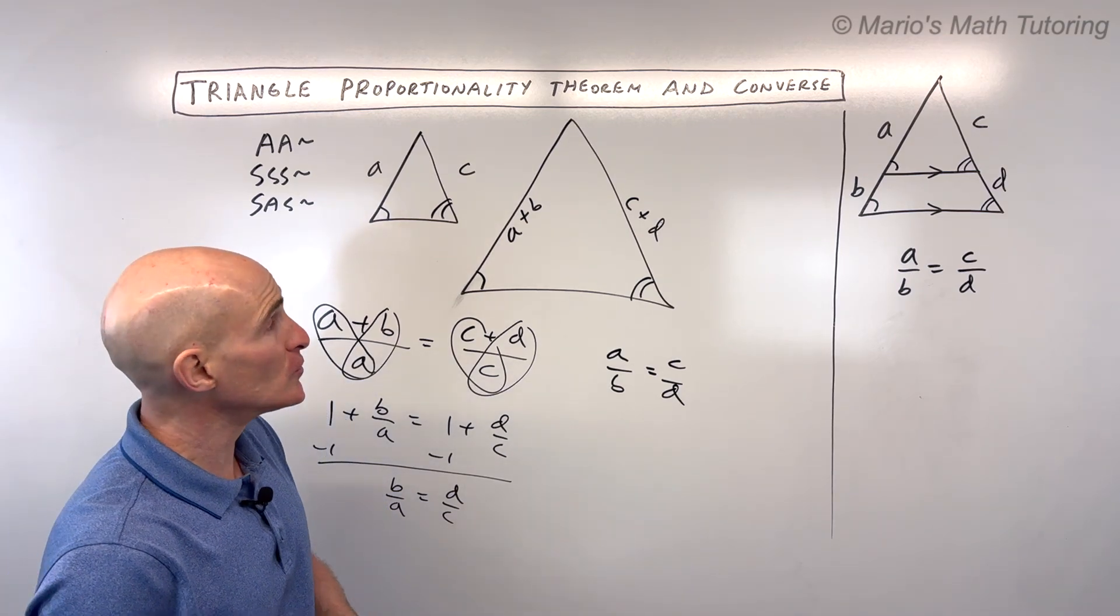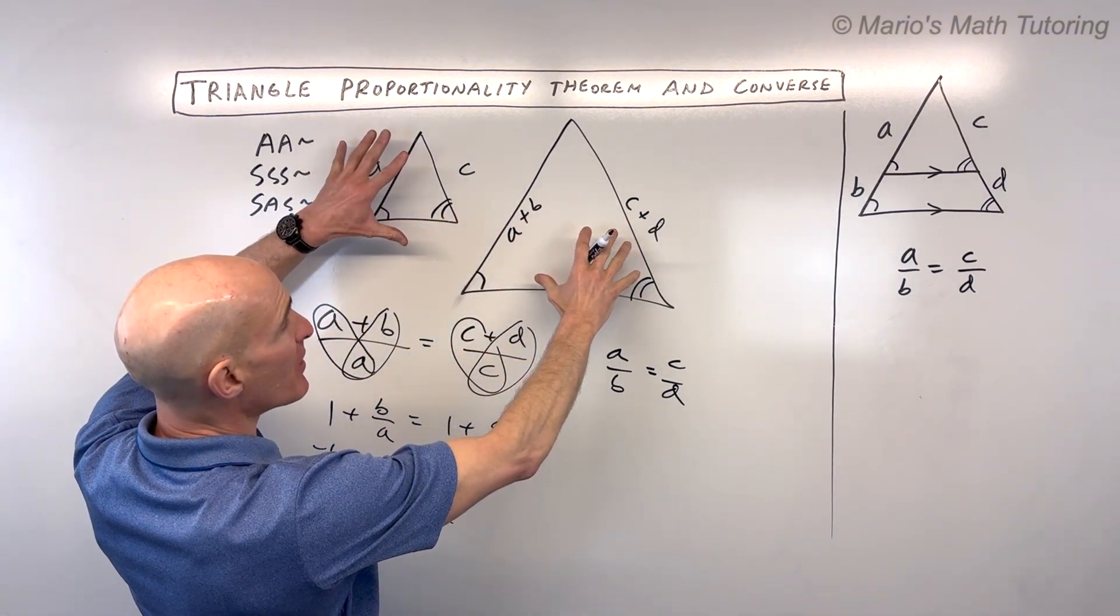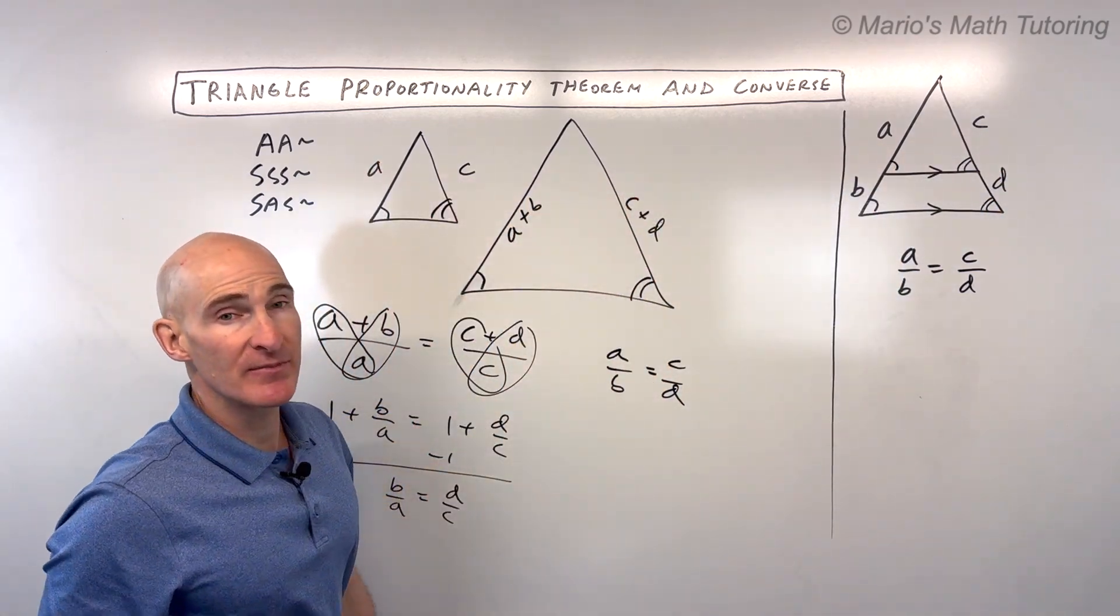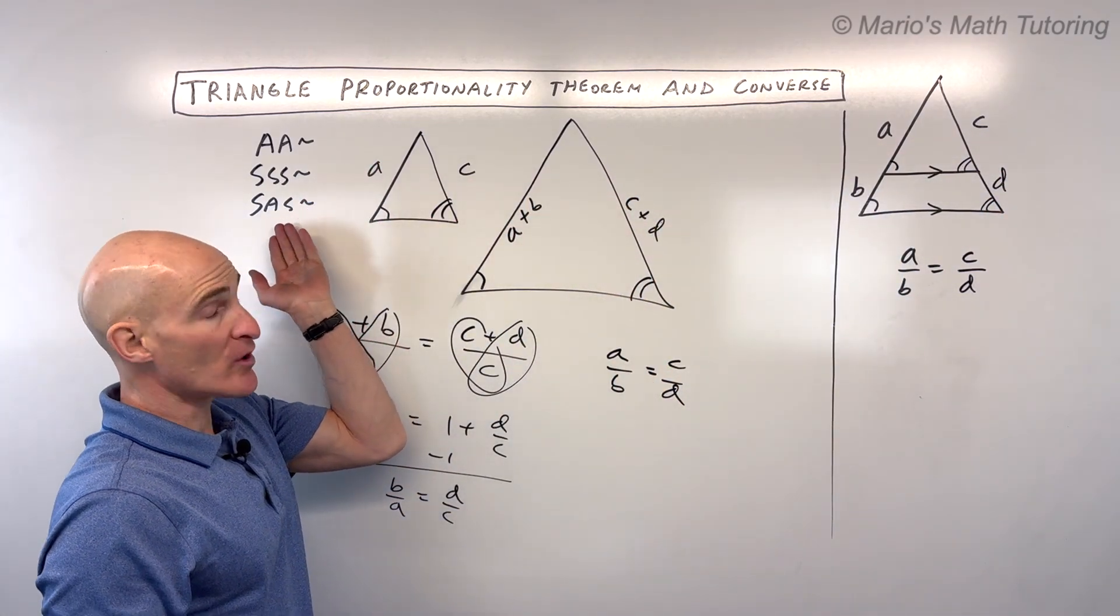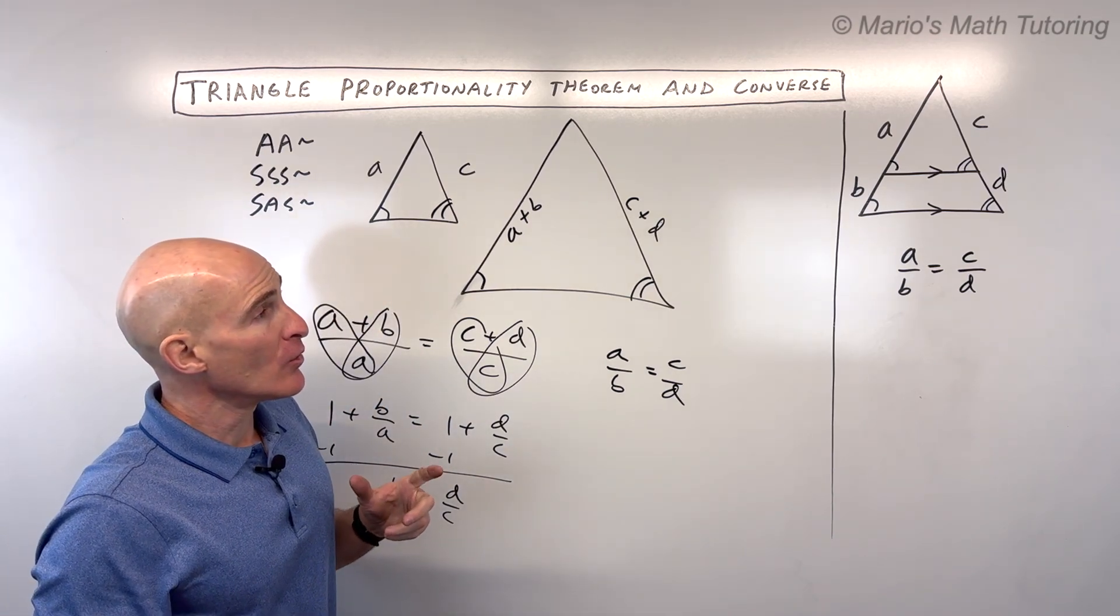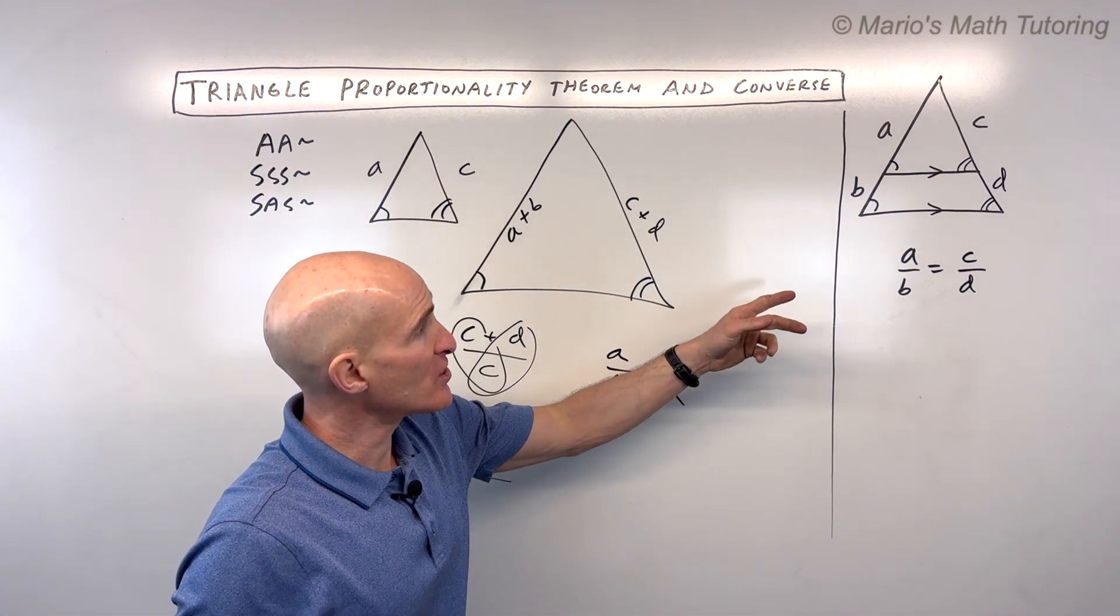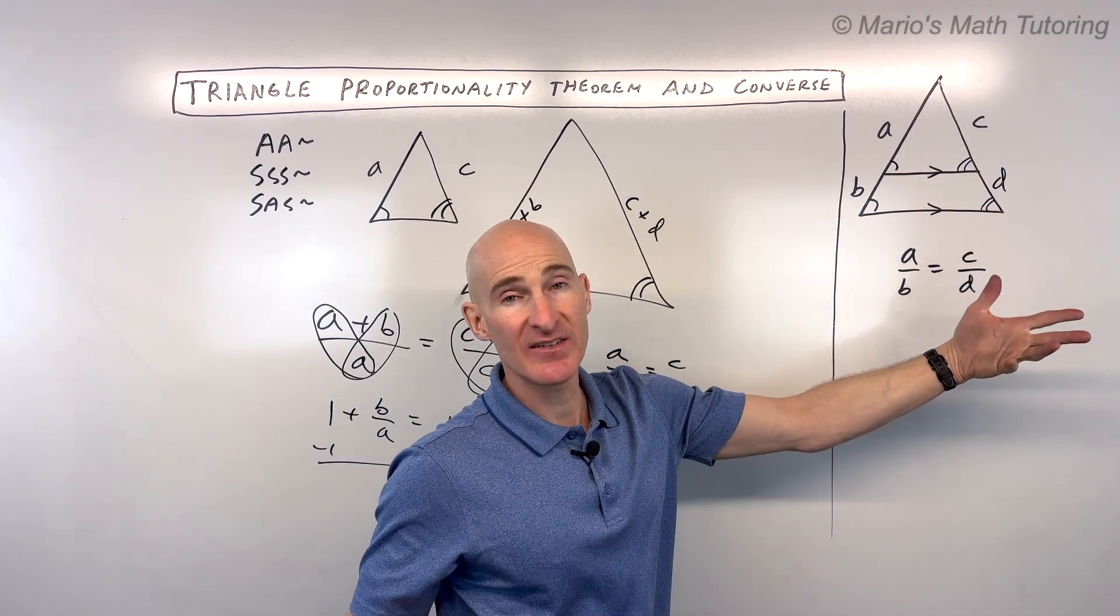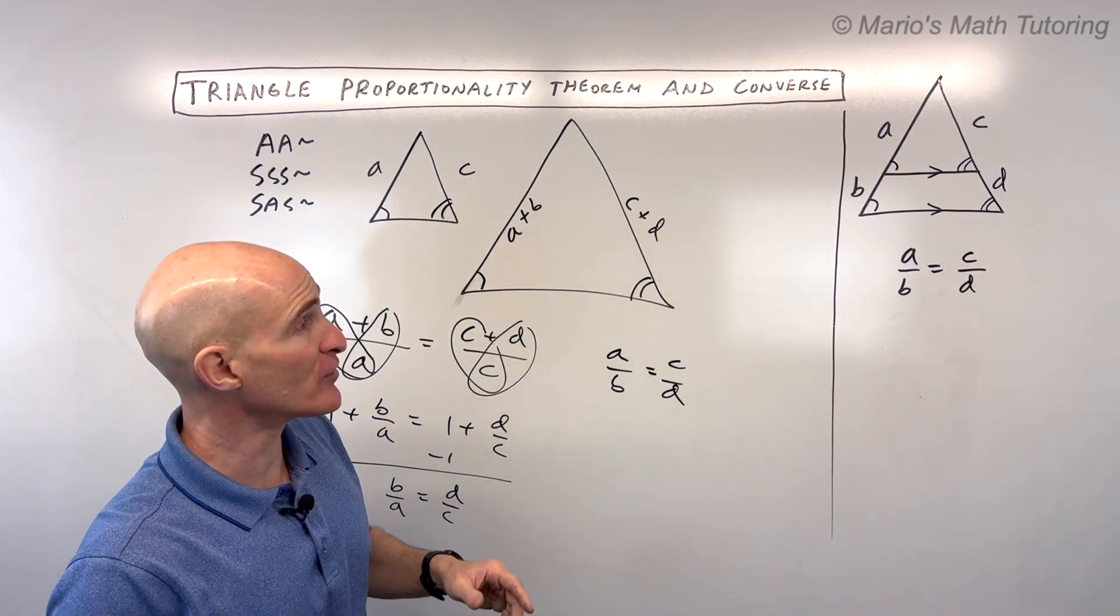So instead of having to split the two triangles apart, add these two segments and these two segments, and then make a proportion using the fact that the two triangles are similar by angle-angle, we can use this theorem, the triangle proportionality theorem or the side splitting theorem, to just say A is to B as C is to D. You can make a proportion and solve for the missing quantity.